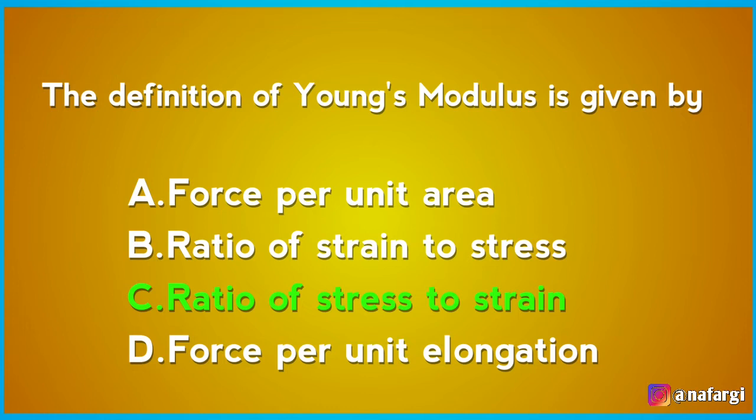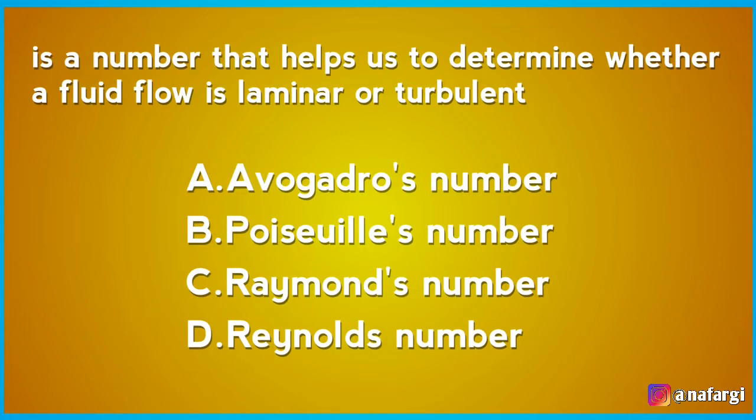The number that helps us determine whether a fluid flow is laminar or turbulent is: A Avogadro's number, B Peaceless number, C Reimond's number, D Reynolds number. The correct answer is Reynolds number. If the Reynolds number is low, the flow is laminar; if it is high, the flow tends to be turbulent.